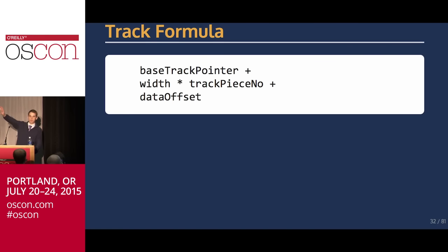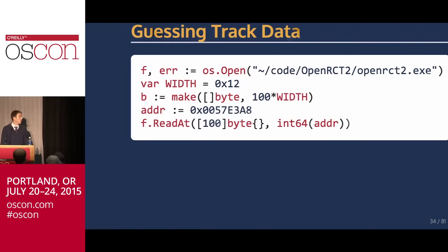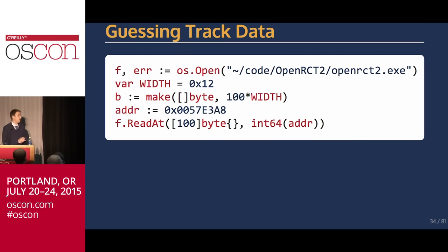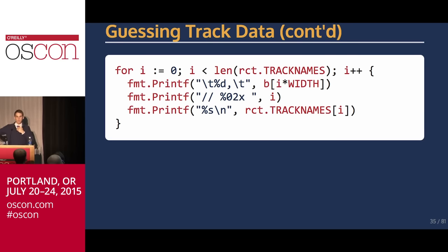Not much to go on, but it lets you start making guesses. You can read through the track data, see an address, then write Go code to see what's there and make a guess about it. Go has nice interfaces for this — you can open the .exe at any point, specify an address, read into a byte array, specify the width, loop over the array, print out all the data, print the name of the track piece, and see whether the data makes sense.